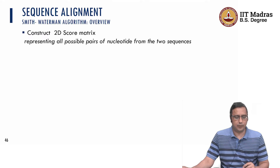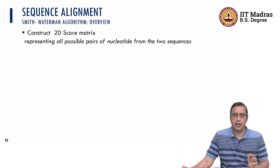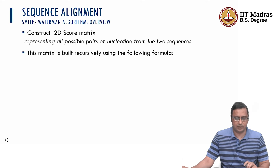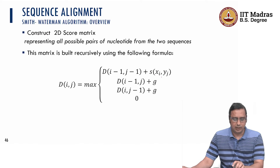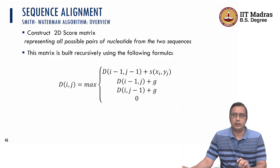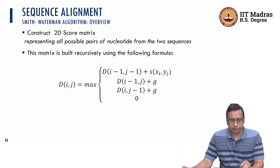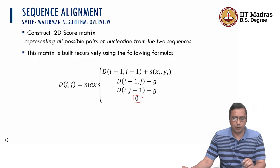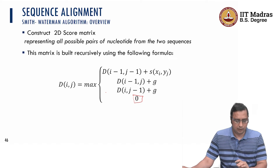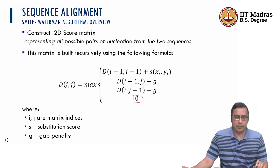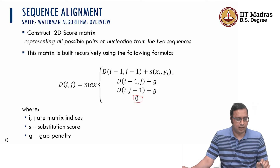Let us start with the Smith-Waterman alignment algorithm. Construction of the 2D score matrix is similar to the Needleman-Wunsch algorithm, representing all possible pairs of nucleotides from the two sequences including the empty sequence. The recursive formula is slightly different — it is an extended version of the NW algorithm where we did not have the 0, but here the maximum value also includes 0 as a possible value. I and J are the matrix indices; S is the substitution score between Xi and Yj, and G is the gap penalty.